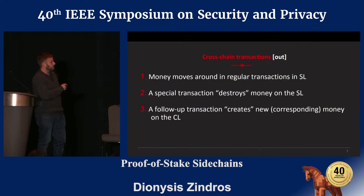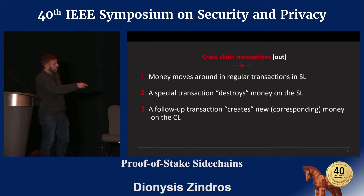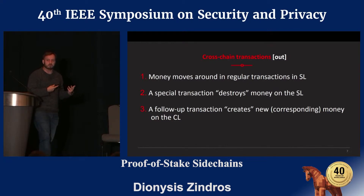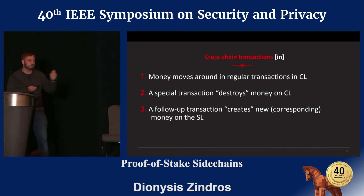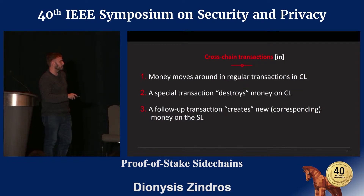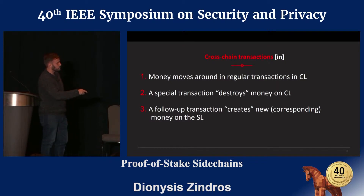Moving money out of the settlement layer and into the computation layer is the easy part. The life cycle of money starts in the settlement layer, which is also where the macroeconomic policy of the currency is applied — where new coins are minted. There's a special transaction that destroys the money, confirmed in the settlement layer, and then a follow-up transaction creates corresponding money in the computational layer. Moving money back from the computational layer into the settlement layer is the harder part. The challenge is validating the creation transaction in each case to ensure the respective amount has been destroyed in the remote blockchain.